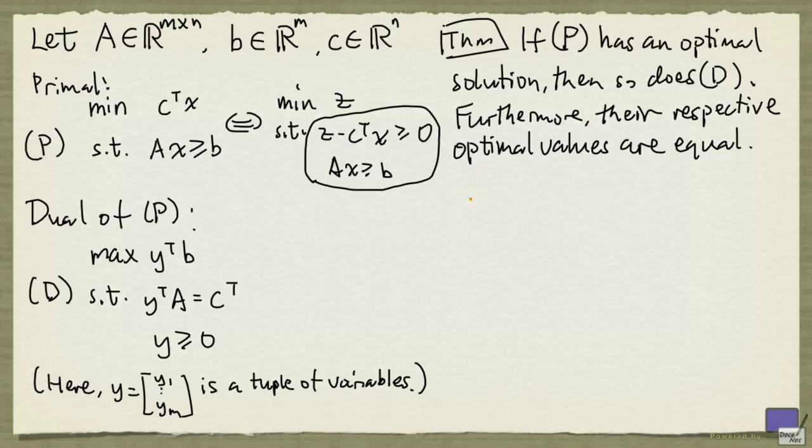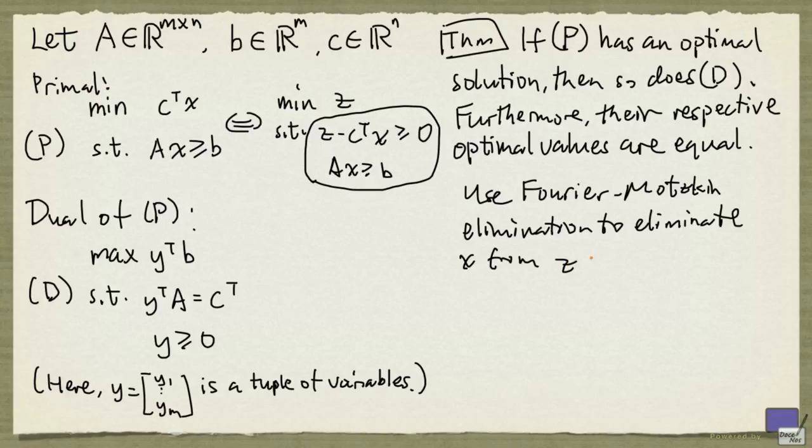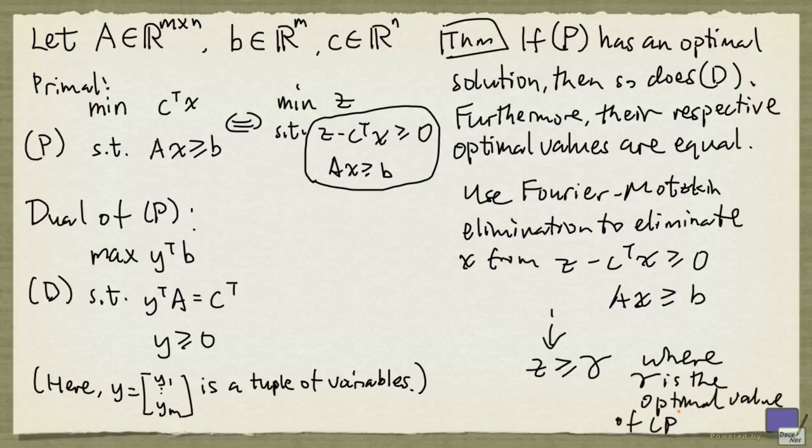And the way we do this is, we use Fourier-Motzkin elimination to eliminate x from the system, z minus c transpose x greater than equal to 0, ax greater than equal to b. And remember that we'll end up with an inequality, z greater than equal to gamma, where gamma is the optimal value.